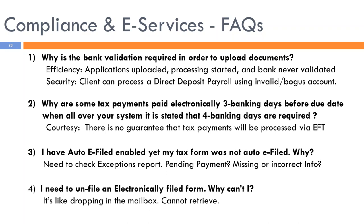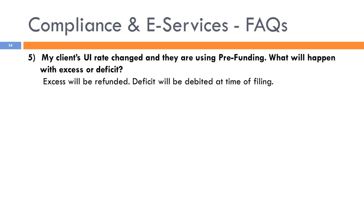Why can't I un-file an electronically filed form? It's like dropping an envelope in the mailbox — you cannot retrieve it. Batch files are transmitted to the taxing authority shortly after e-filing. Pulling a form from a batch is a major, labor-intensive process, if possible at all. If a client's unemployment rate changed and they are using pre-funding, the excess will be refunded and any deficit will be debited at the time of filing the form. The system checks the balance due versus the amount pre-funded and makes the necessary adjustment.